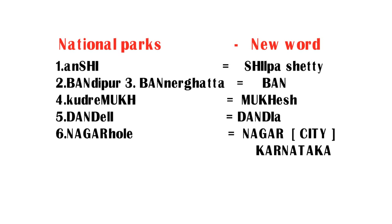Coming to the fourth one, Kudrimukh National Park — if you observe this word, the last four letters are M-U-K-H. Using these four letters I made the word 'Mukesh.' Both words contain the same letters: M-U-K-H. So try to remember Kudrimukh as Mukesh.